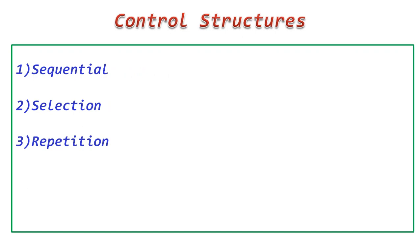Control structures are further divided into three parts: one is sequential structure, the second is selection, and the third is repetition. Sequential means: if I write a simple program without using a for loop or if-else statement — simple statements are there — then all contents will execute one by one: first line, then second line, then third line, then fourth line. This type of execution is known as sequential execution.